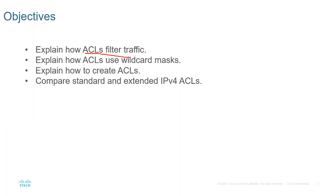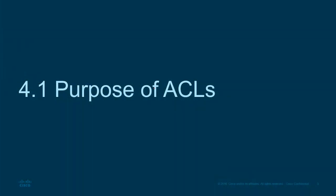There are four objectives for this chapter. First, how we can explain how ACL filters traffic. Second, the concept of wildcard mask, which was already covered in Cisco 2 last semester. Third, how to create ACL — covering the theory concept before we do configurations. And last, we will do comparisons between standard and extended ACLs.